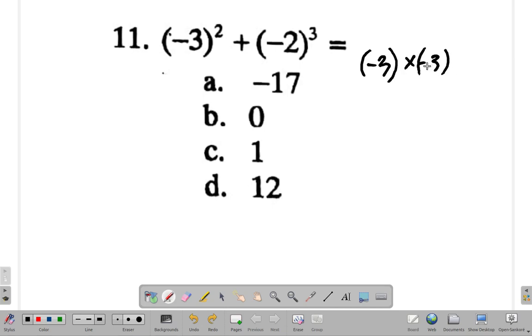Negative 3 by negative 3. Negative by negative is a positive. 3 times 3 is 9.